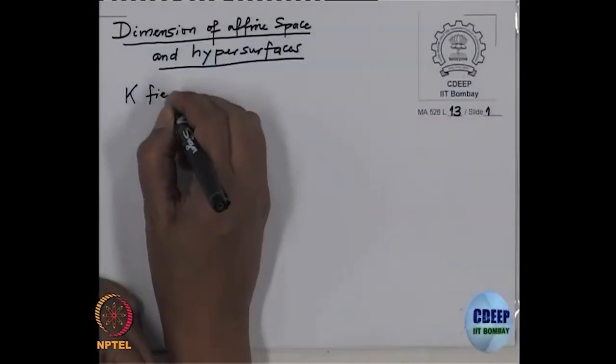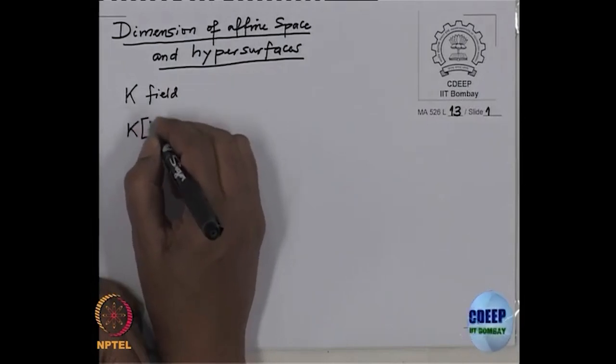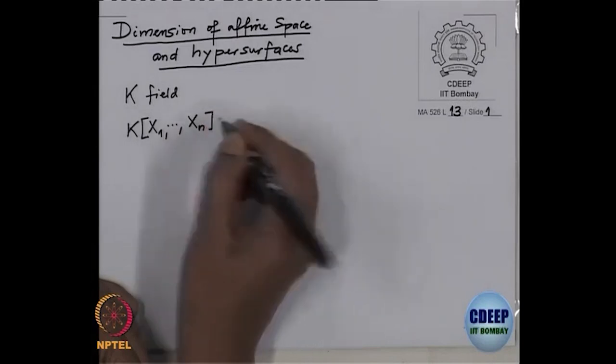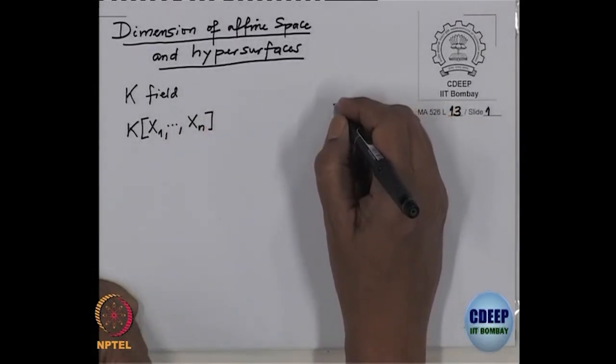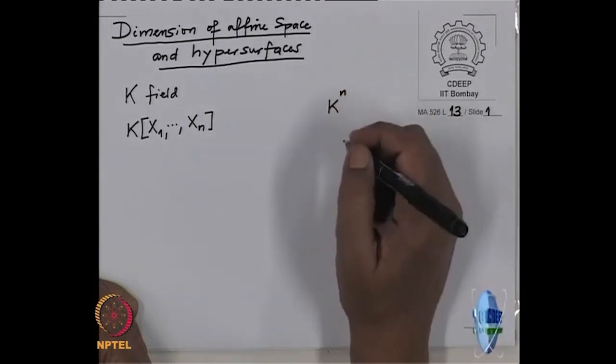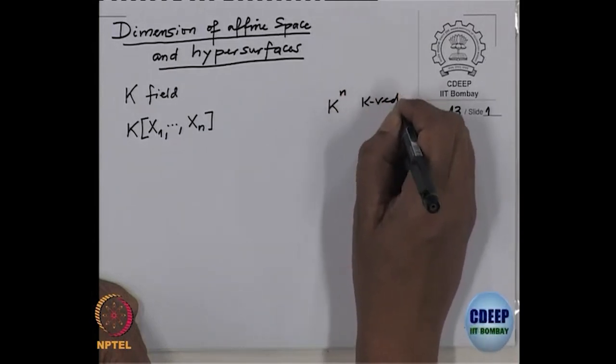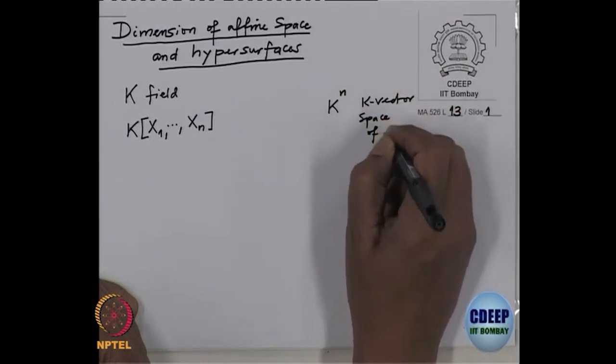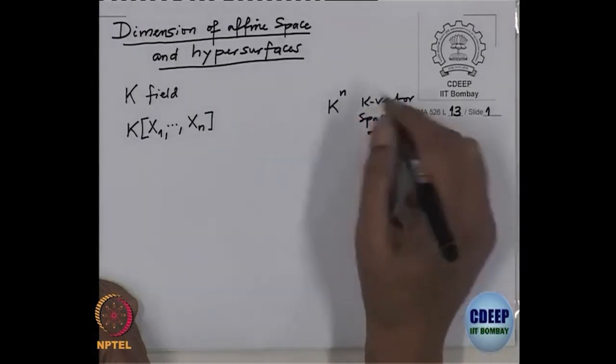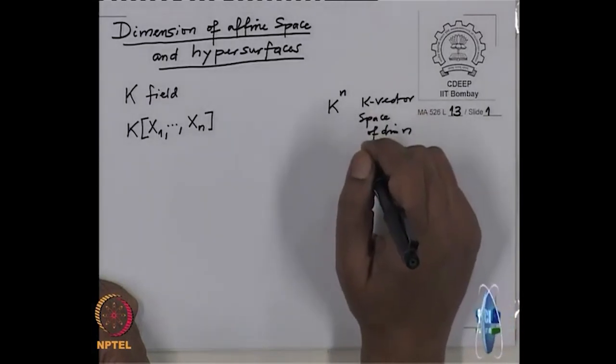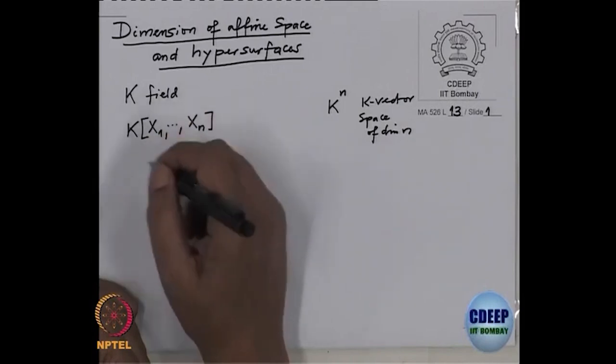Today I want to tie up certain things about dimension and give some more examples of computation with the dimension of the polynomial ring. If we have a field k, we have a polynomial algebra over a field in n variables. In linear algebra the corresponding object is a vector space of dimension n, k^n — an affine n-space. In commutative algebra or algebraic geometry, that corresponds to this polynomial algebra.